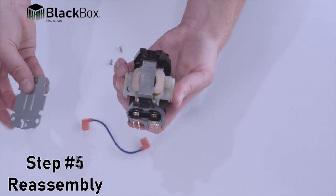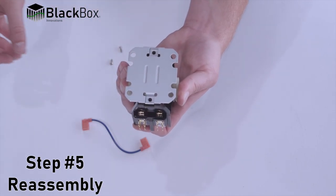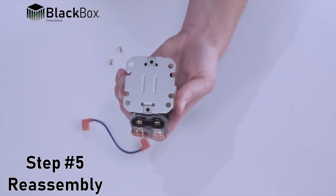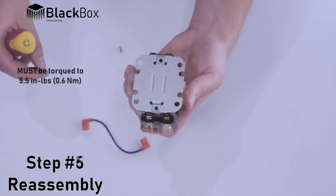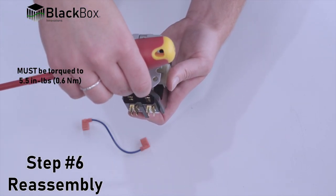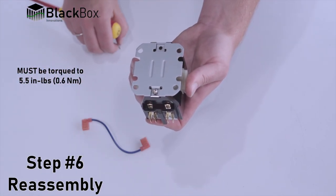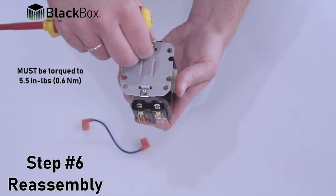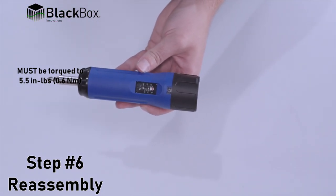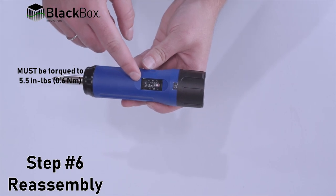Step five, while holding assembly together, install base mounting plate onto contactor assembly. Step six, install two screws to top and bottom of the base mounting plate to torque specifications, 5.5 inch pounds or 0.6 Newton meters.